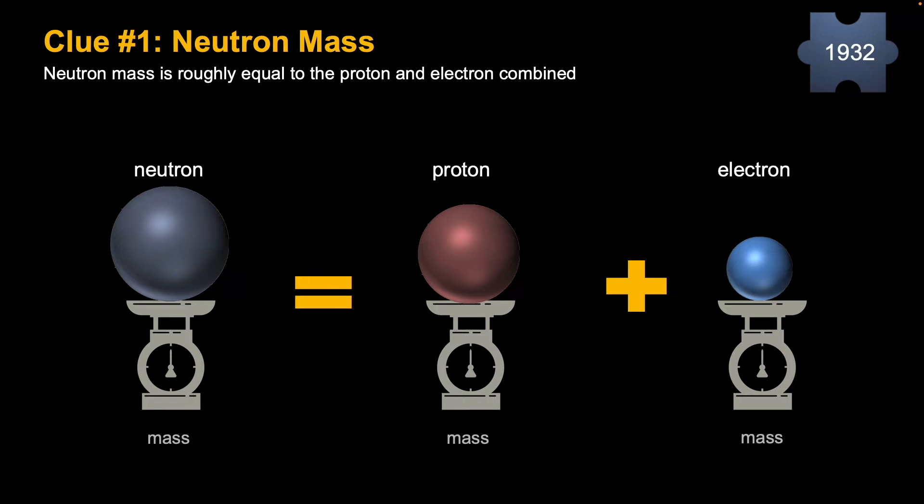Clue number one. The neutron was discovered in 1932. It has a mass that is roughly equal to the proton and the electron combined.